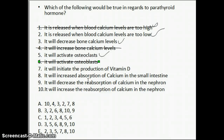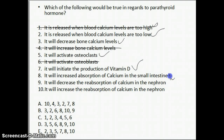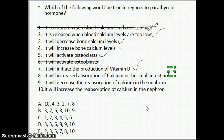For option seven, parathyroid hormone would initiate the production of vitamin D. That is correct, because vitamin D assists and helps the absorption of calcium in the small intestine. So if you absorb more calcium, it would increase blood calcium levels, which makes option seven correct. Option eight is also correct — it would increase the absorption of calcium in the small intestine because we want to increase blood calcium levels.